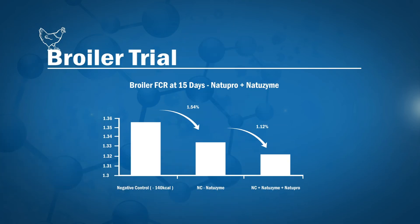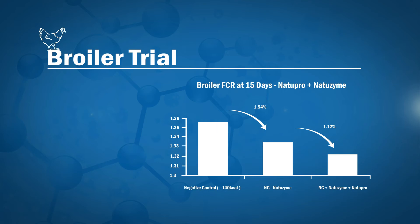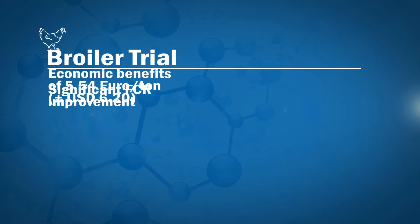Natupro and Natuenzyme were added to the negative controlled diet to determine the synergistic effects between multi-enzyme and probiotics in broiler chickens. The addition to the negative controlled diet resulted in significant FCR improvement and provided economic benefits of €5.54 per ton.